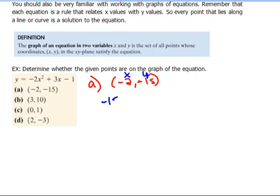Instead of y, let's put negative 15. And everywhere I see an x, I'm going to replace that with a negative 2. So that means negative 2 times negative 2 squared plus 3 times negative 2 minus 1. Now, let's see if we actually get negative 15 when we simplify that.